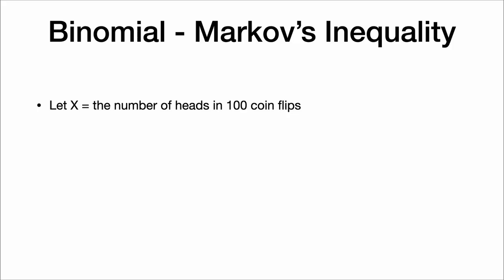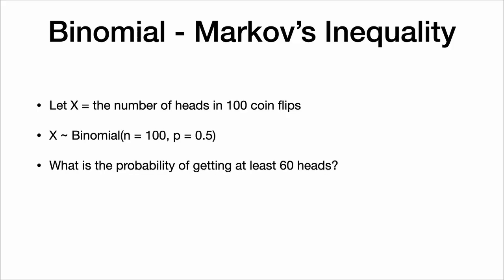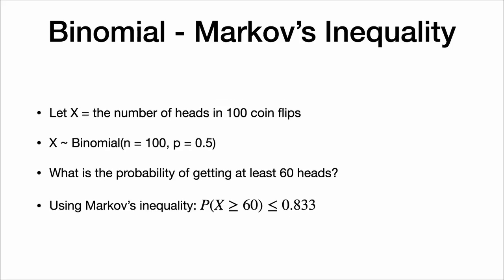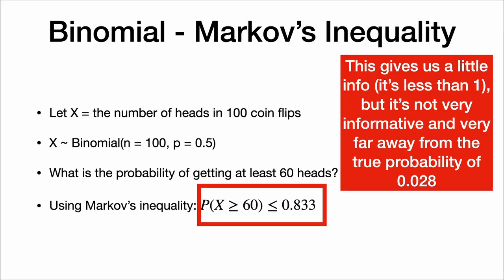Without a computer, how could I use Markov's inequality? Well, that's a binomial random variable and I want the probability of at least 60 heads. Using Markov's inequality, the expected number of heads is 50, so the probability of getting at least 60 heads is less than or equal to 50 divided by 60, or 0.833. This is a little bit informative — we know probabilities are less than 1, and now I've got it down to 0.833 — but that's still far from the true answer of 0.028. This doesn't give us a lot of information.